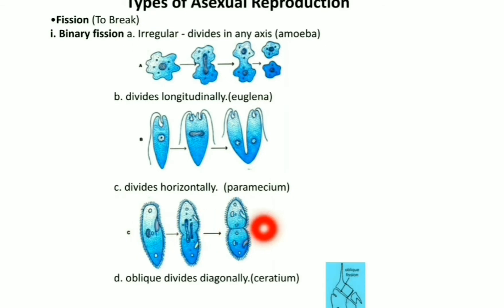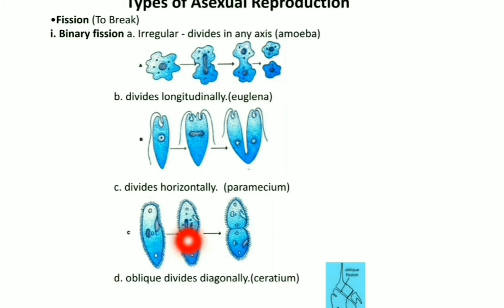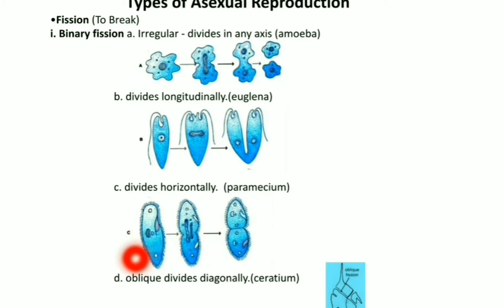Paramecium shows transverse division and divides into two daughter cells. In Ceratium, division is diagonal and it divides into two parts.